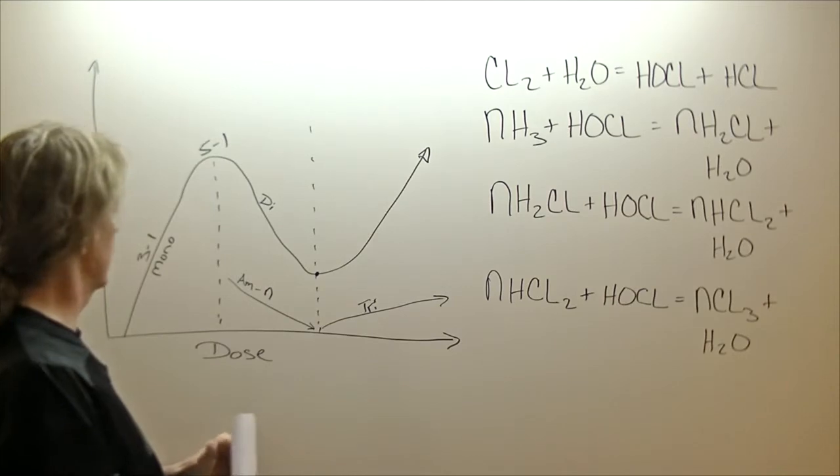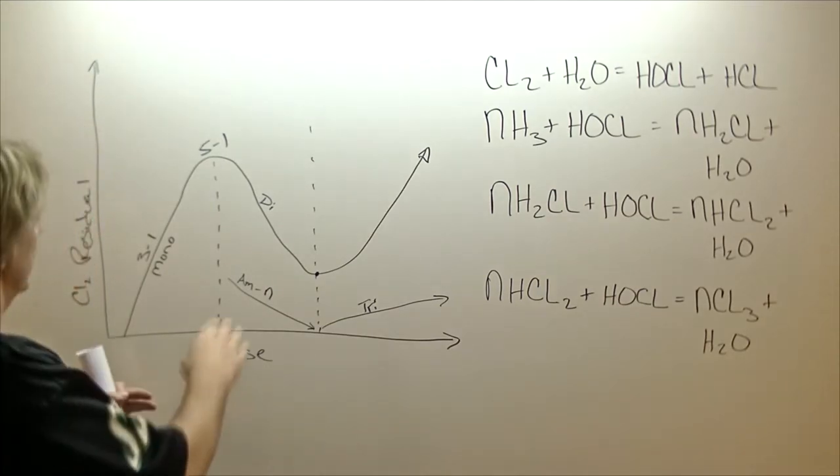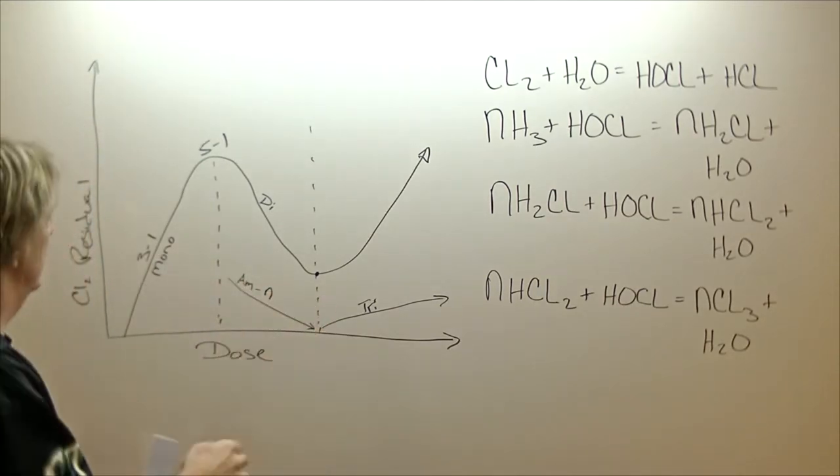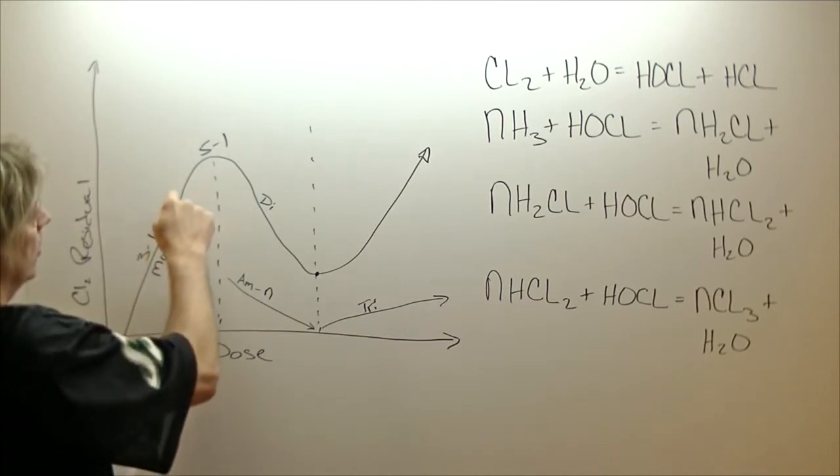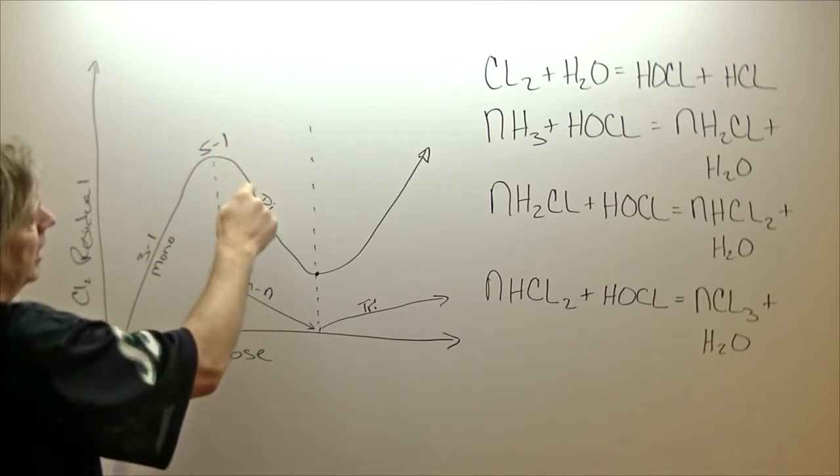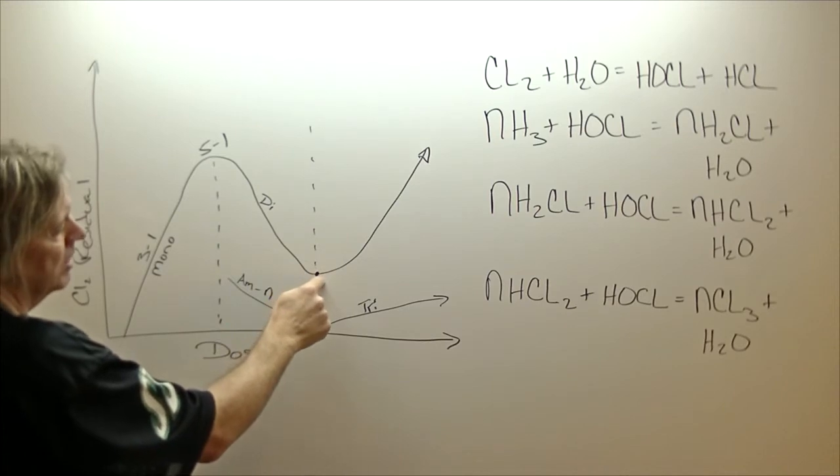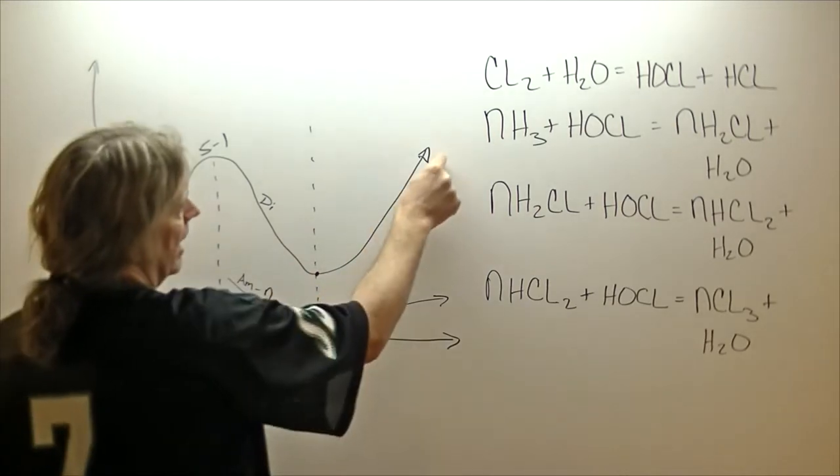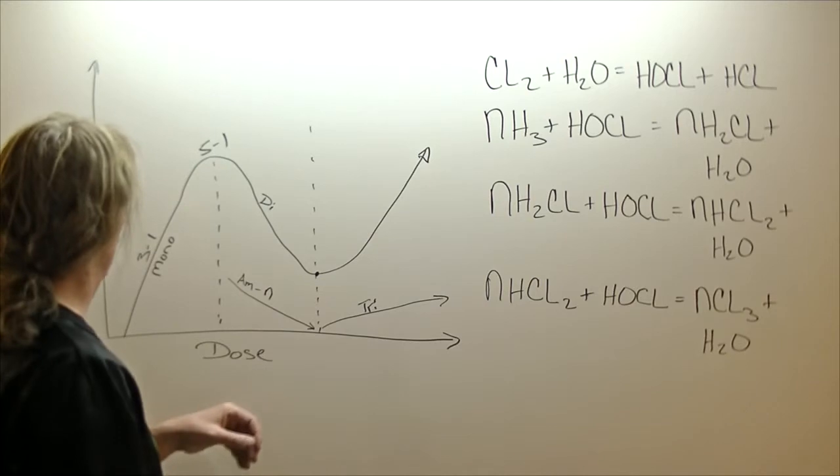This is the break point curve. We already just talked about break point. If you're not familiar with it, you add chlorine to water, it reaches the top, you keep adding chlorine, you hit the break point at the bottom, and then everything you add after that is free available residual. We just kind of went over that.